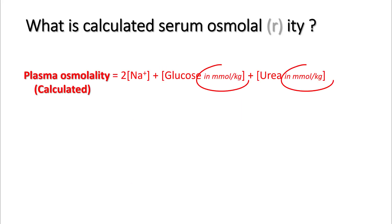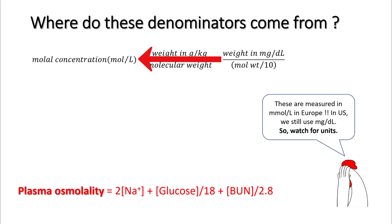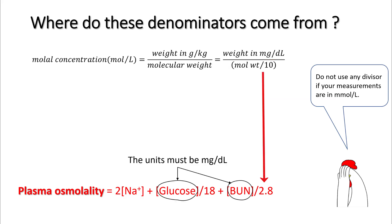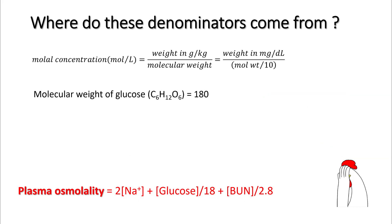An important thing to understand here is the units. If your unit is millimoles per kg, you simply add all values to get osmolality. Sodium is measured in millimoles or milliequivalents, and since sodium has a charge of 1, millimoles and milliequivalents are the same. If your measurement unit is milligrams per dL, you need to use dividing factors — for example, glucose by 18 and BUN by 2.8. These divisors come from converting milligrams per dL to millimoles per liter by dividing the molecular weight by 10. So the unit must be in milligrams per dL to use these divisors — watch out for units. The molecular weight of glucose is 180, so glucose is divided by 18.